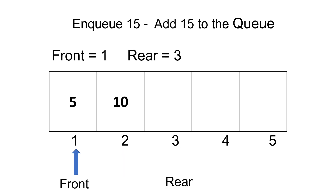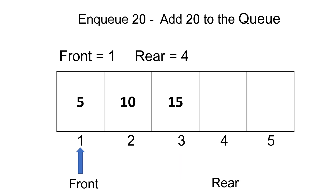Again, to insert new element 15 to the queue, rear will point to the next index, which is 3, and add the new element at index 3. In the same way, add new element 20 at the new rear, which is index 4.